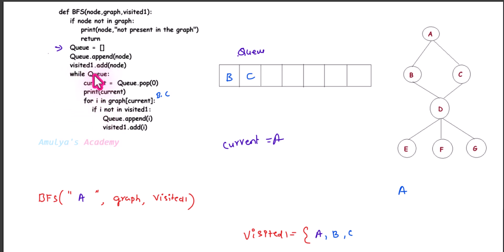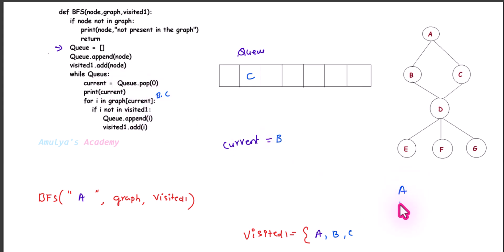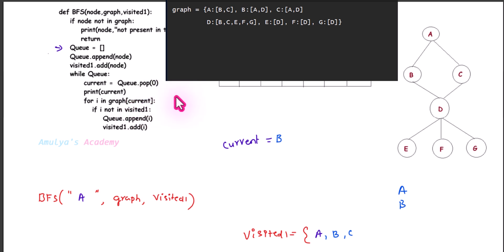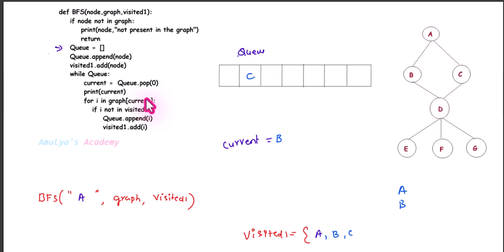Control goes back to the while loop. q is not empty — b and c are present — so the condition is true. current = q.pop(0) removes 'b' from the queue, so current becomes 'b'. Print current — 'b' is printed to the screen. For i in graph[current] — graph['b'] gives the adjacent nodes of 'b', which are 'a' and 'd'. First i is 'a' — we check if 'a' is not in visited_one, but 'a' is already present, so the condition is false and the body won't execute. Control goes back to the for loop and i becomes 'd'.